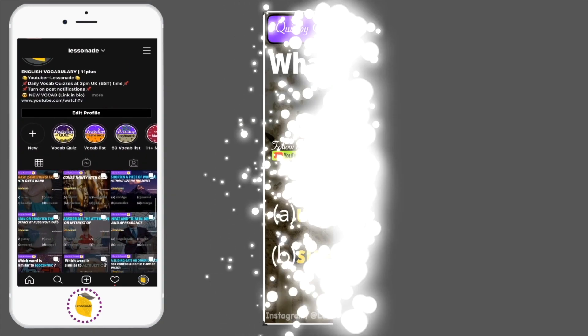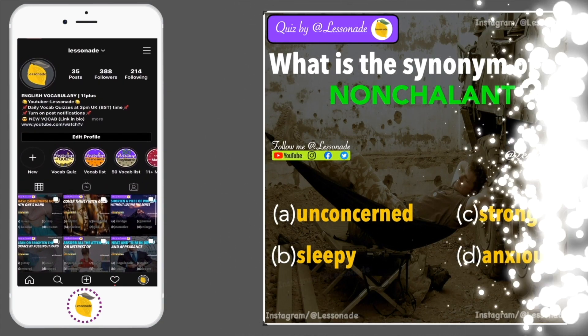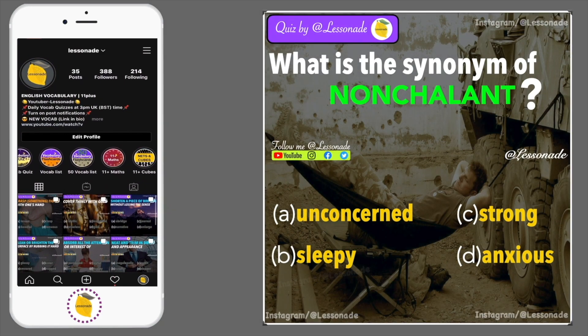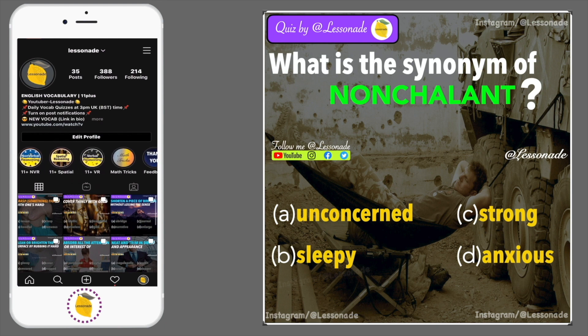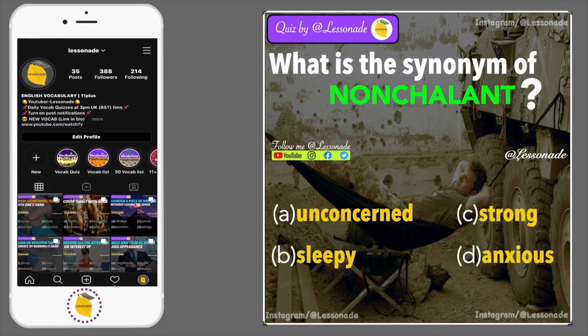What is the synonym of nonchalant? Options are: A, Unconcerned; B, Sleepy; C, Strong; and D, Anxious.